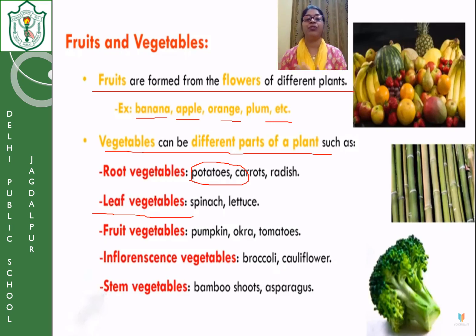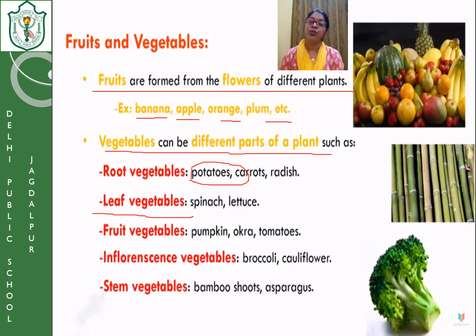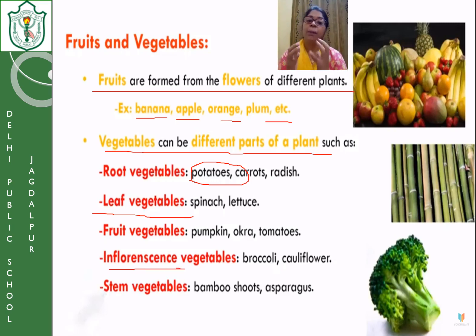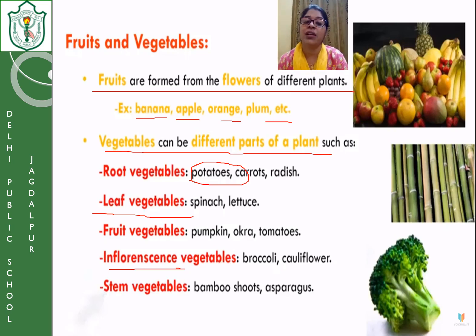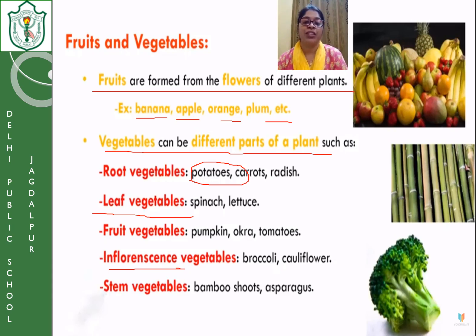Fruit vegetables are those formed from flowers — for example, pumpkin, okra, and tomatoes. Tomatoes are called fruit vegetables. Inflorescence is a new term — it means the part of a flower. When a plant bears a flower and some part of that flower is eaten, that is called inflorescence. Broccoli and cauliflower are inflorescence vegetables. Stem vegetables include bamboo shoots and asparagus.